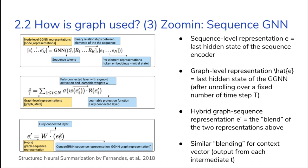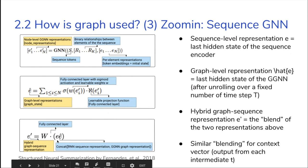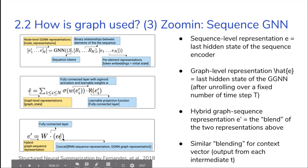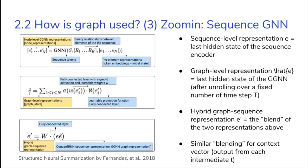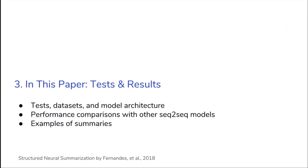Now we have a graph-level representation and a sequence representation from the standard sequence encoder. To combine the two, we concatenate both the sequence and graph representations and pass them through a fully connected layer. This blending gives the final hybrid representation containing both lower-level token information and higher-level structural information. That's the basic idea of the sequence-GNN hybrid. Now let's look at how it performs.